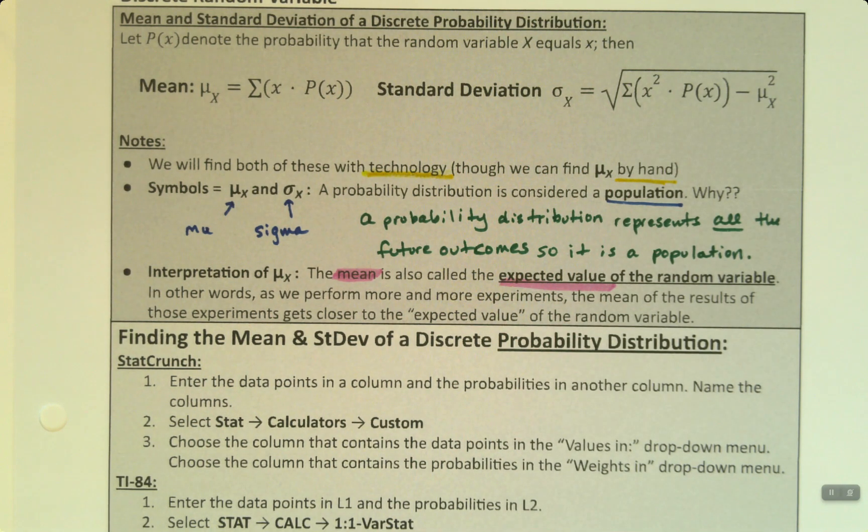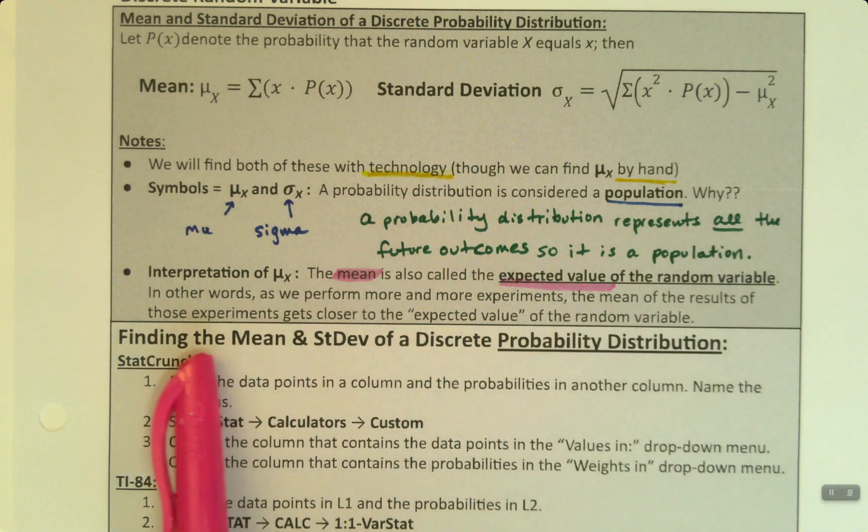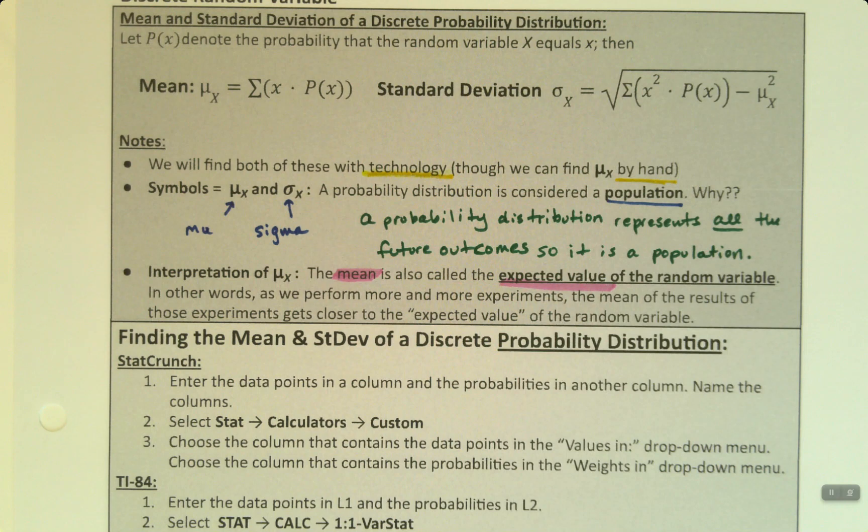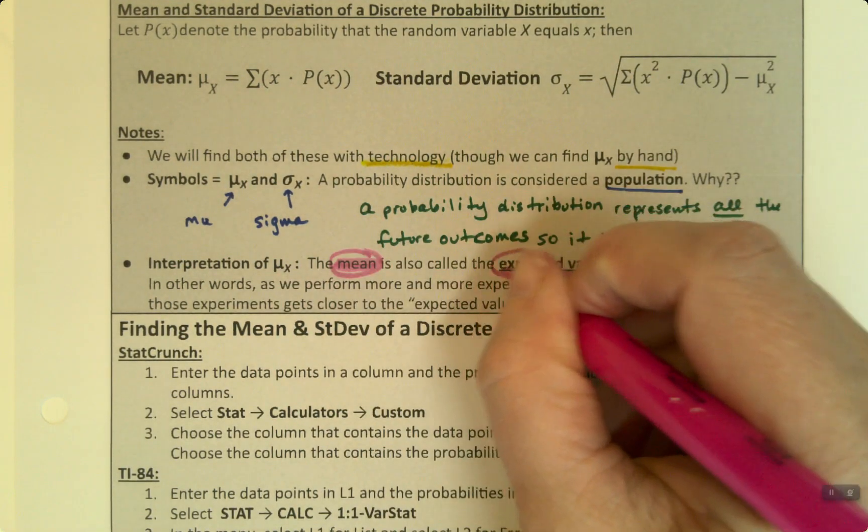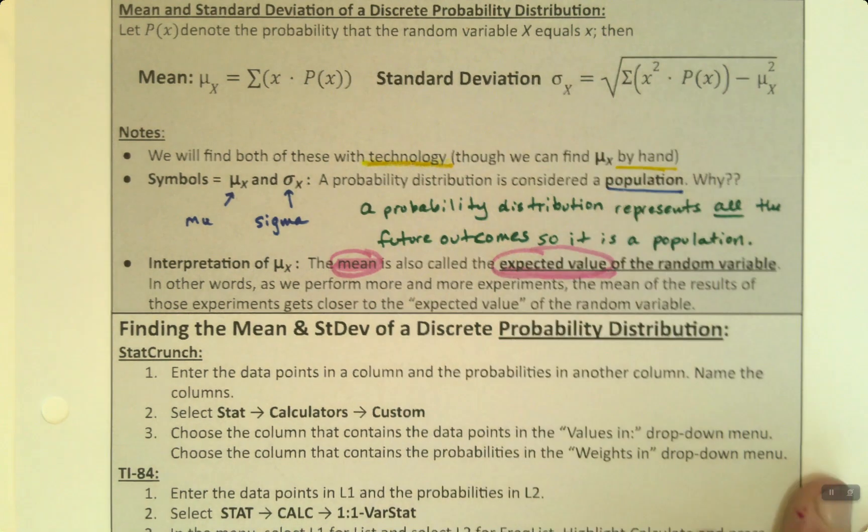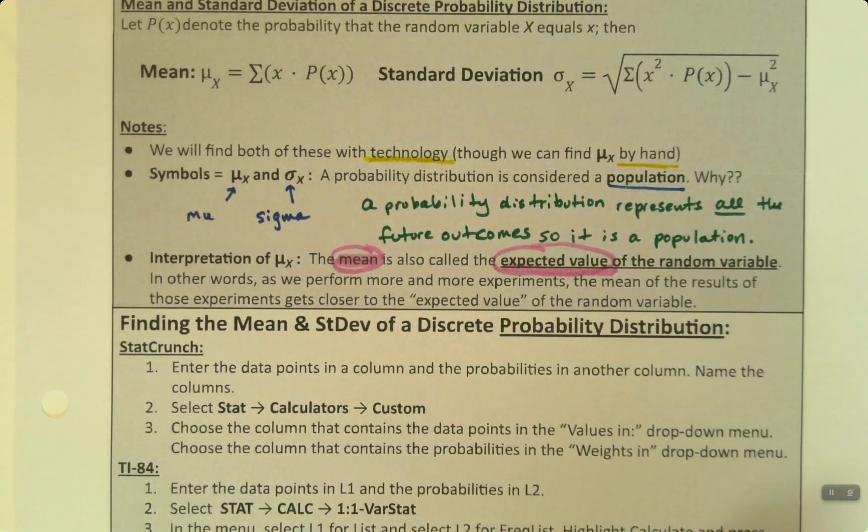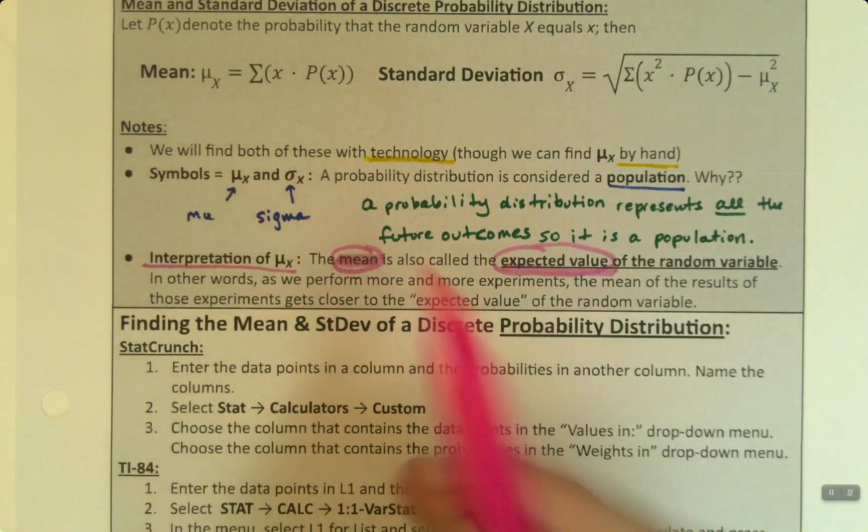So the mean is the expected outcome from a probability experiment. And if we did more and more experiments, the mean of those results would get closer and closer to that expected value of the random variable. So it's very important to know that the mean and the expected value are one and the same. And we'll get more into that in later pages.